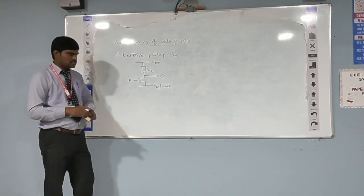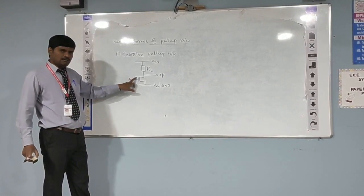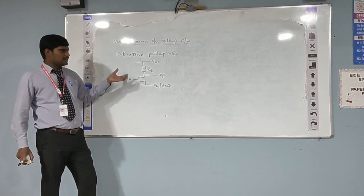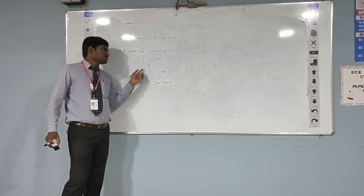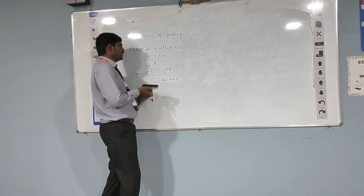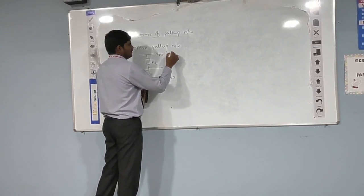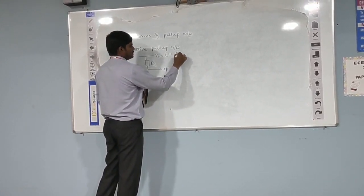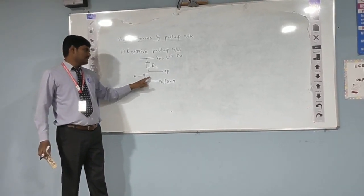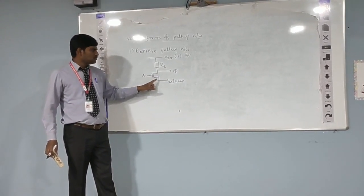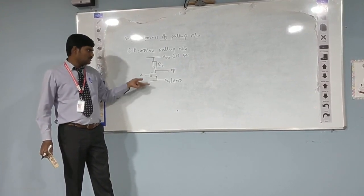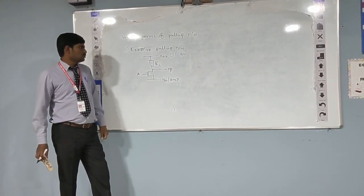So basically, we will be using a resistive pull-up — this is called a pull-up device. The name itself specifies that it is the element which is going to pull the logic up towards VDD, which means logic 1 or 5 volts. And similarly, the transistor connected in the pull-down place is called a pull-down network, because it is going to pull the output to 0.